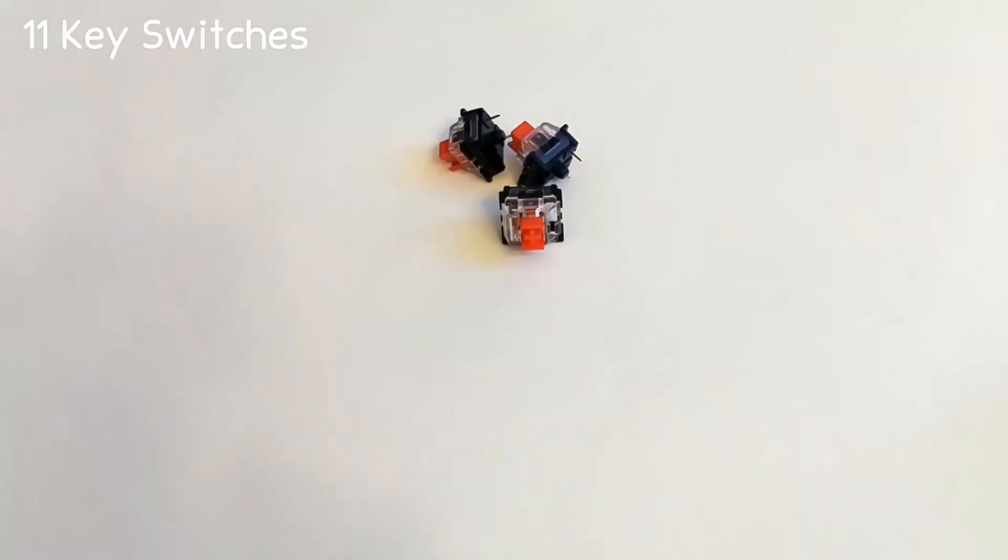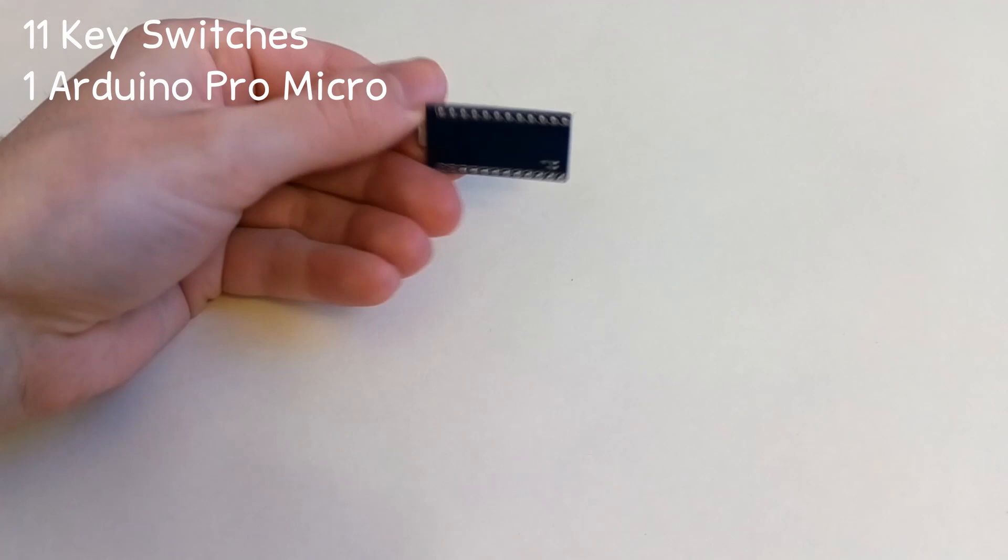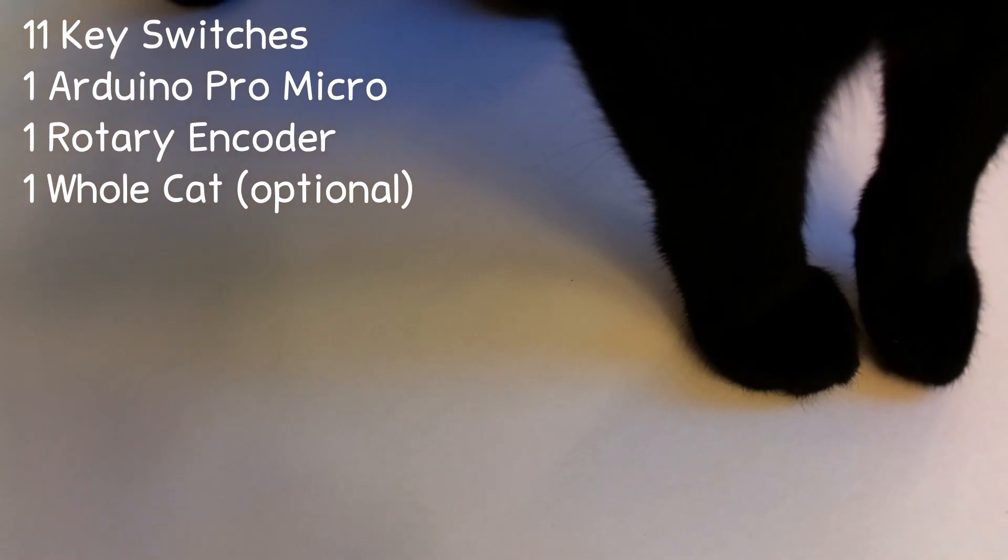So, what changes have I made to the parts on the inside? First of all, last time I used brown switches, this time I'm using red switches, just because I figured I'd try something new. For the controller, we're using a Pro Micro instead of a Teensy, just because, why not? Encoder is exactly the same, we're putting a whole cat in there this time.